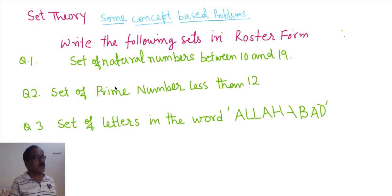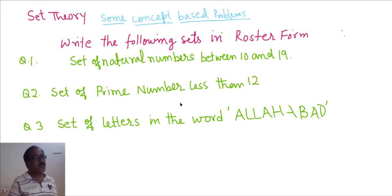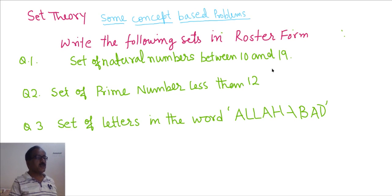As we know that in roster form, we have to write all the elements. See the first problem: set of natural numbers between 10 and 19.